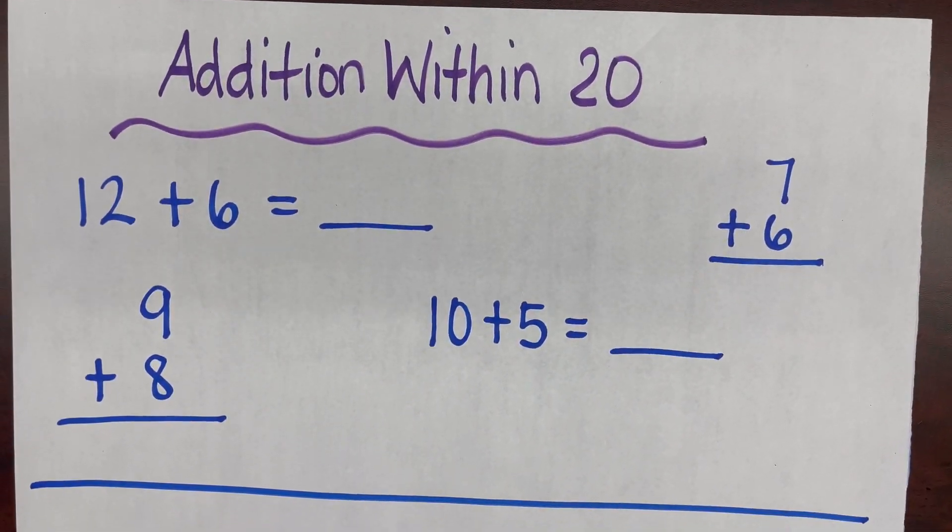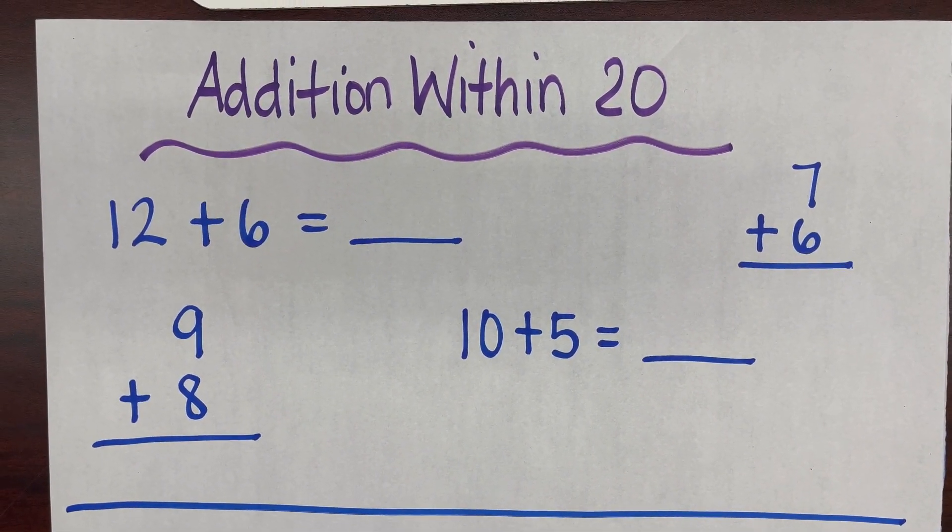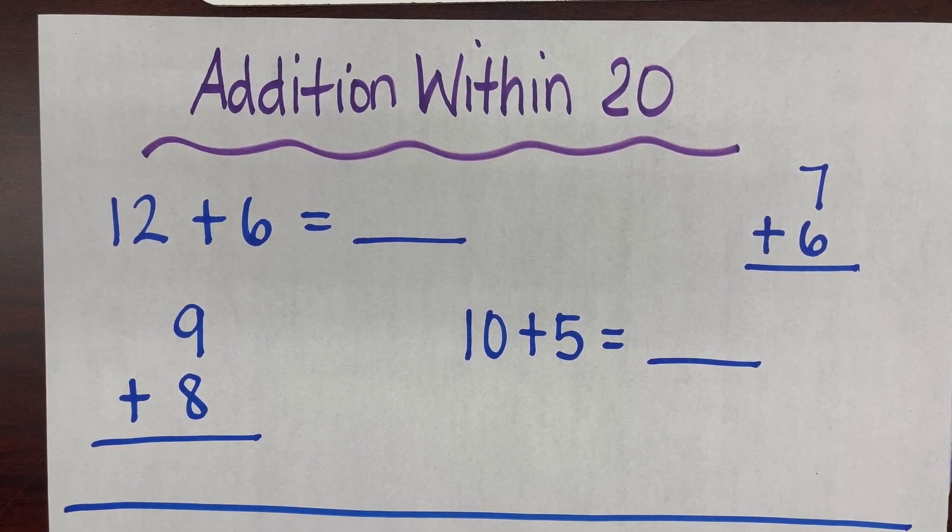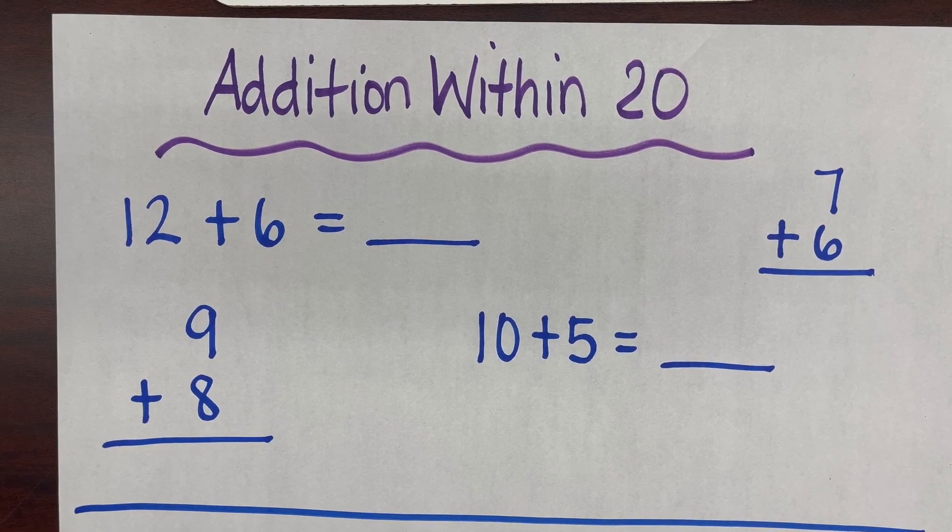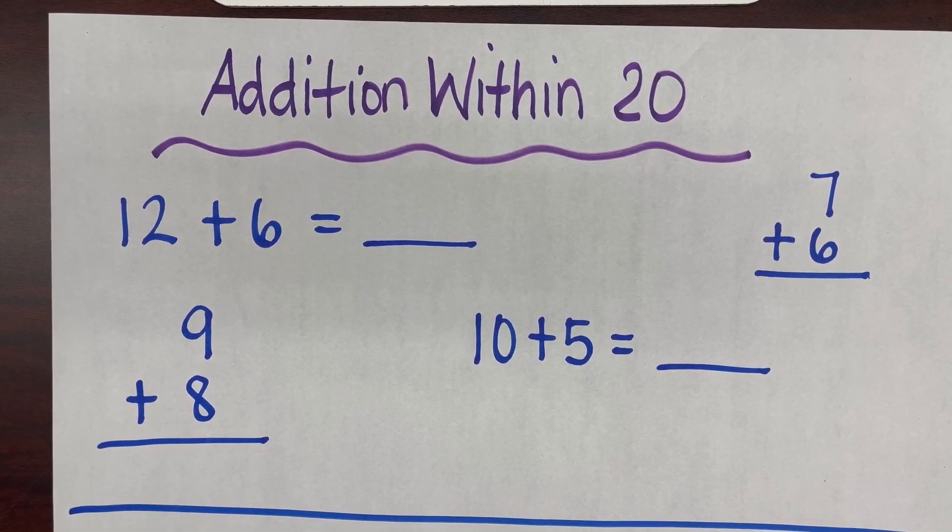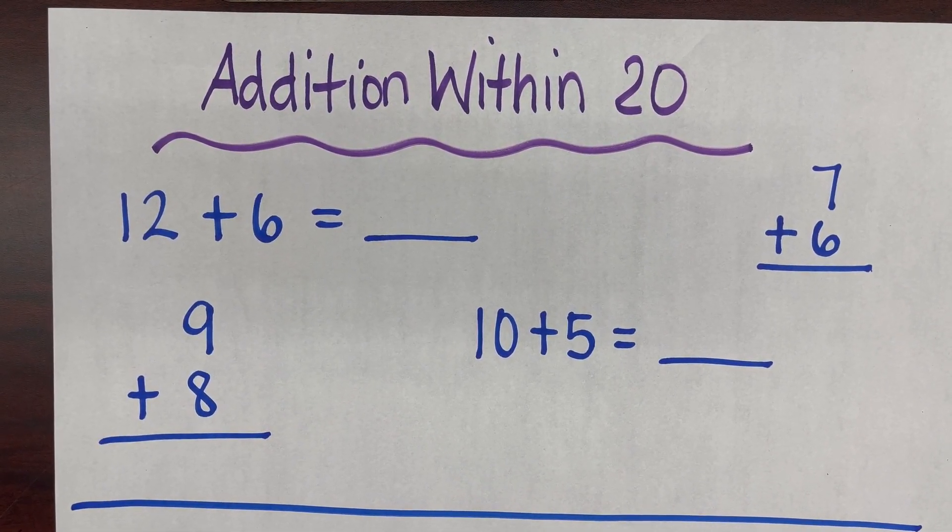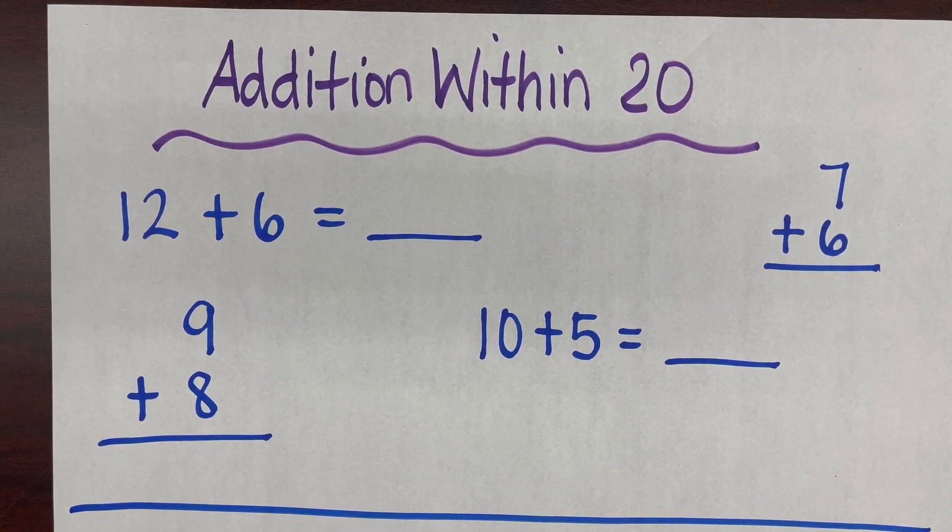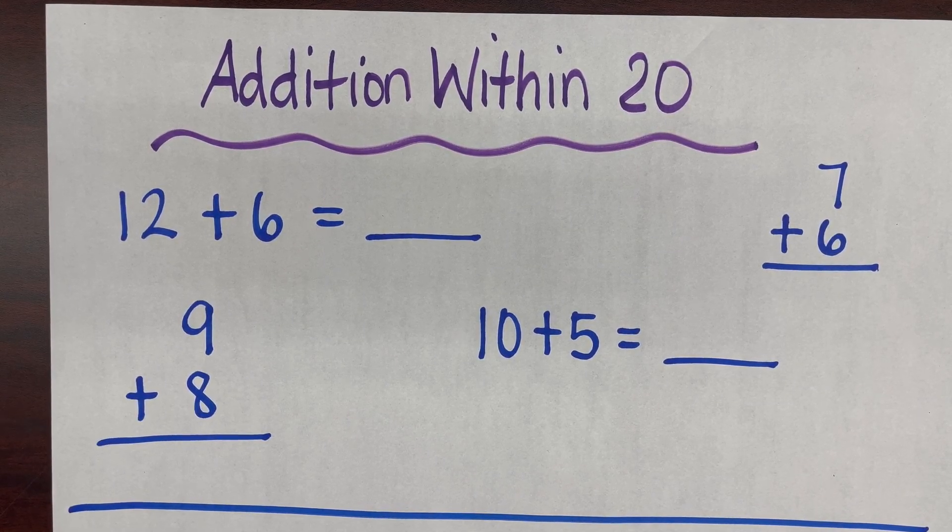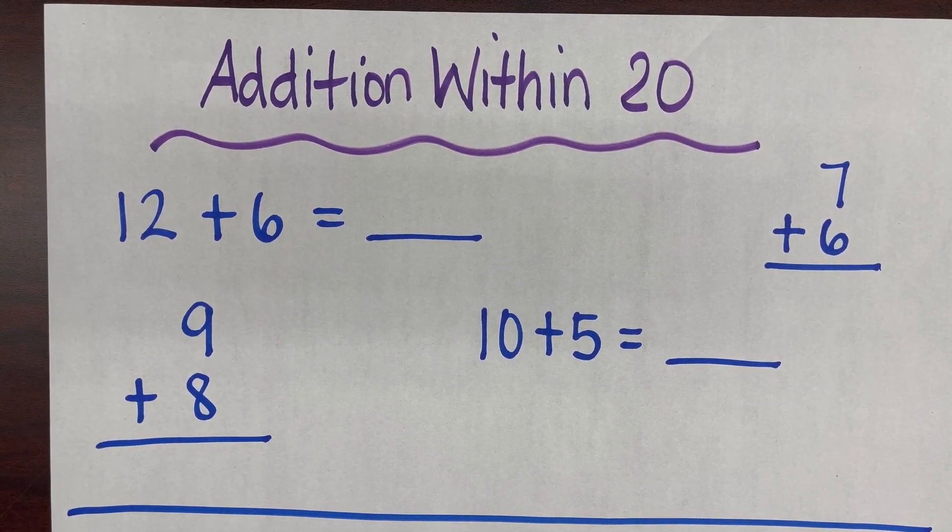So the first review section is computation, looking to solve straight addition problems within 20 using efficient strategies. We've moved away from drawing individual pictures and now we're trying to use strategies from first grade such as catching and counting on, looking for related facts. I'll demonstrate that here for you.